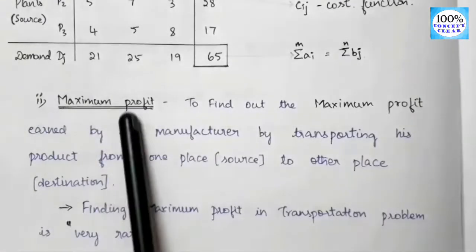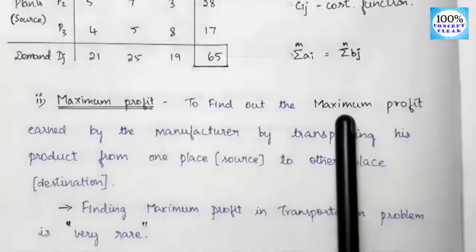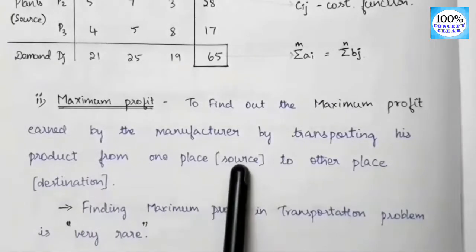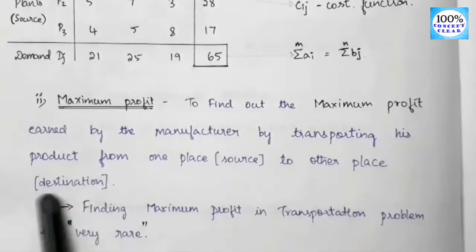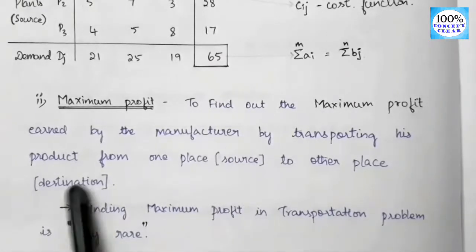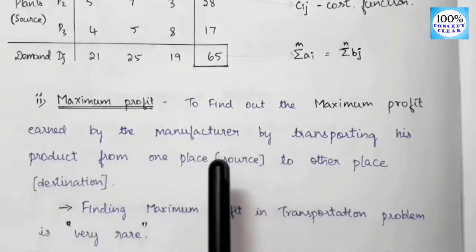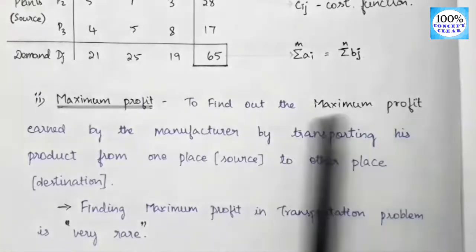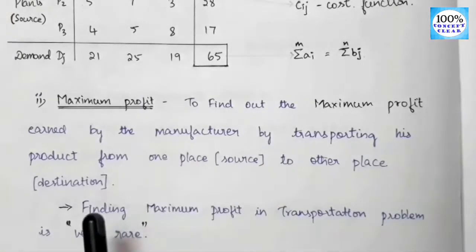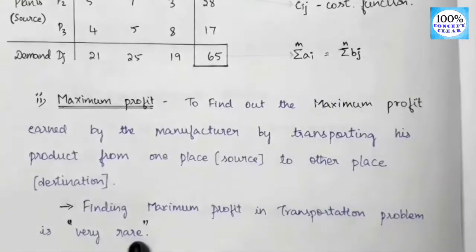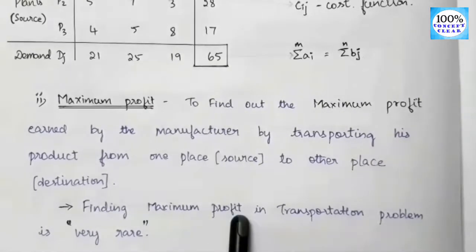Second, what is maximum profit? This is to find out the maximum profit earned by the manufacturer by transporting his product from one place to another place — that is the destination. The source is the manufacturing area. However, finding maximum profit in the transportation problem is very rare.